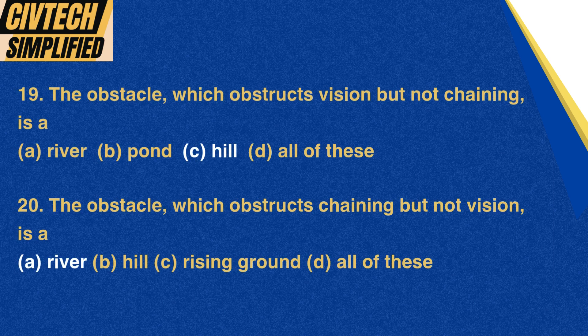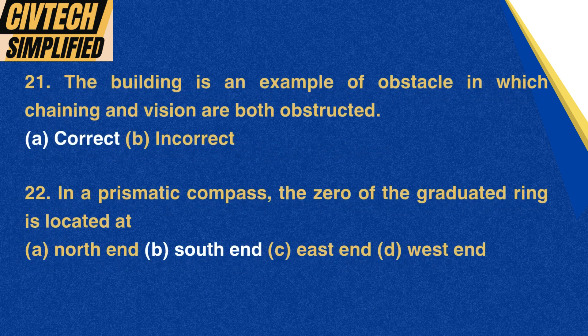Question 19: The obstacle which obstructs vision but not chaining is: A. River, B. Pond, C. Hill, D. All of these. Correct option: C. Hill. Question 20: The obstacle which obstructs chaining but not vision is — (answer not stated). Question 21: The building is an example of an obstacle in which both chaining and vision are obstructed.